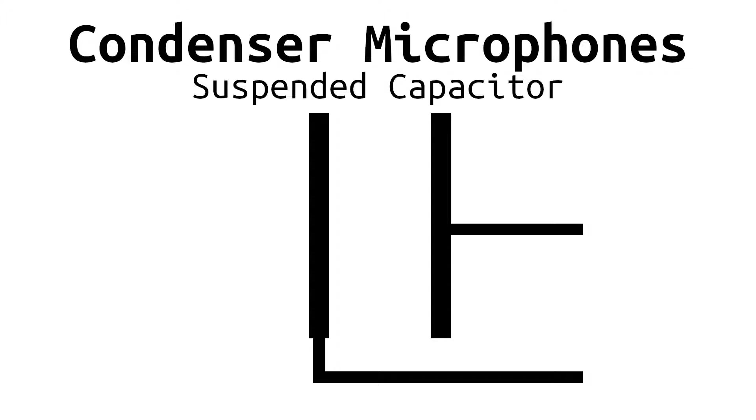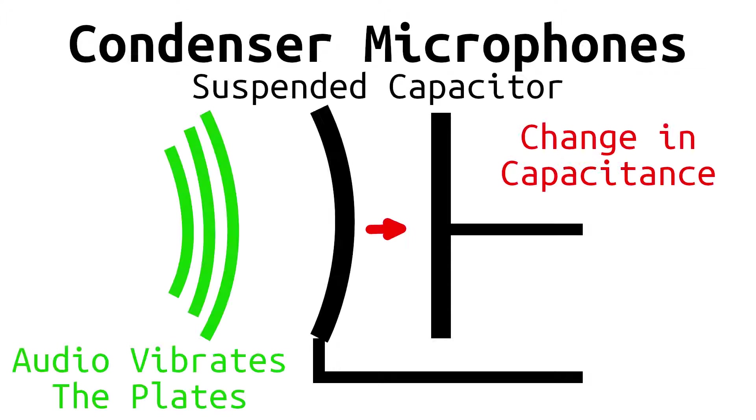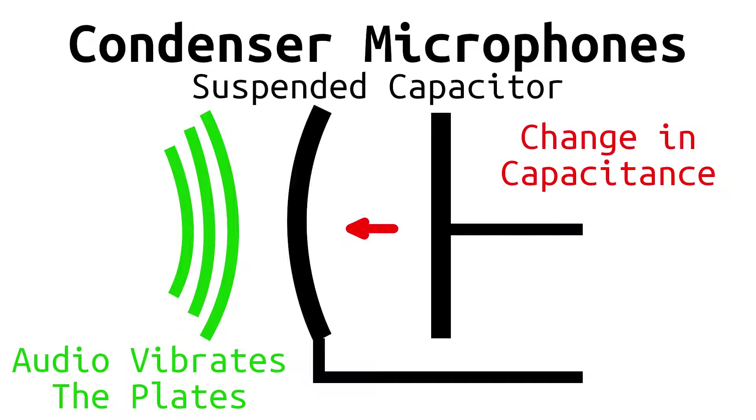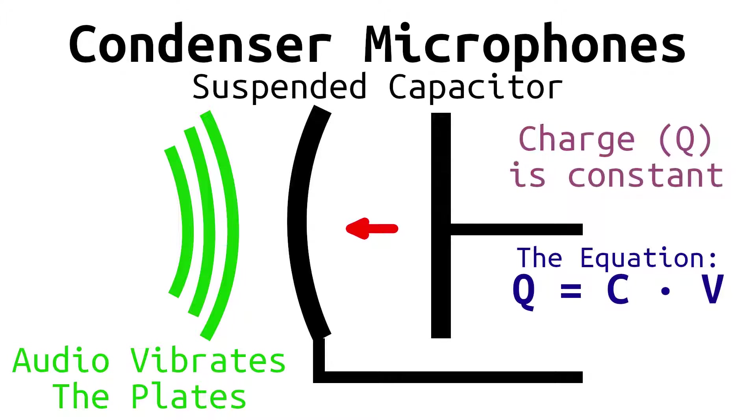Let's take a closer look at what goes into an electret microphone exactly. Inside each microphone is a sort of suspended capacitor. When you talk or make noise, the sound waves come and move the plates of this capacitor, thus changing the overall capacitance. We can convert this into electric signals by looking at one of the more basic capacitor equations.